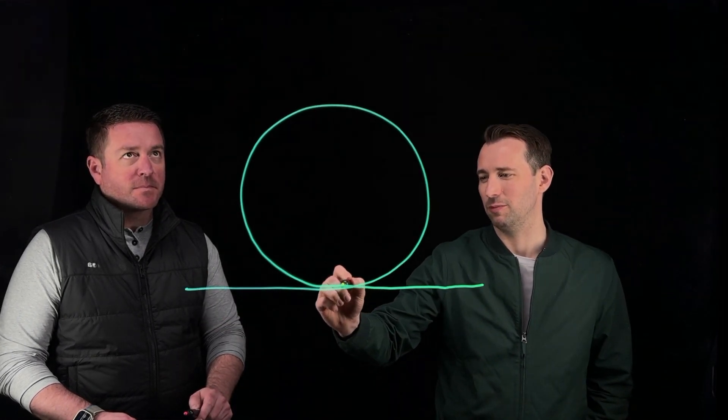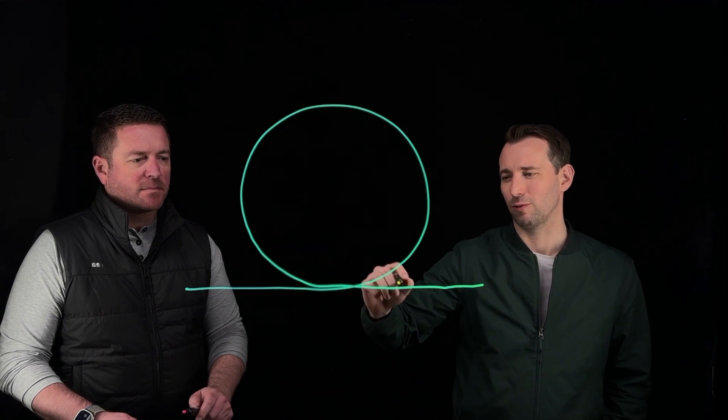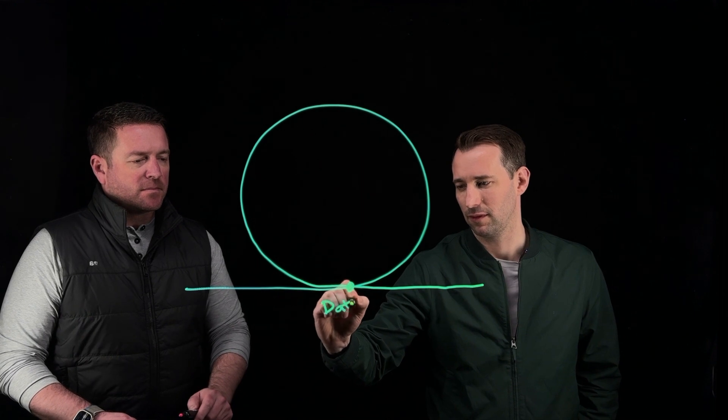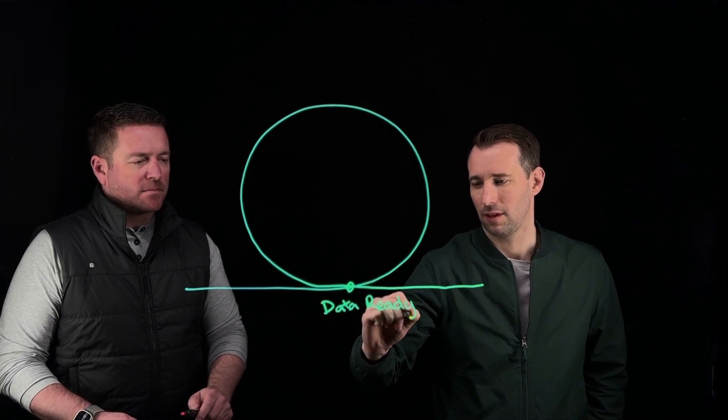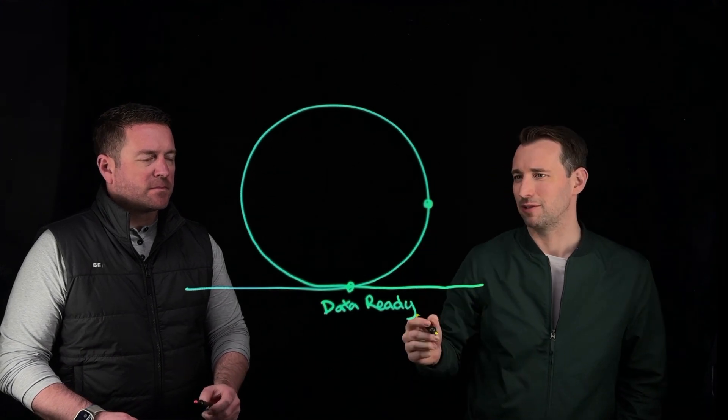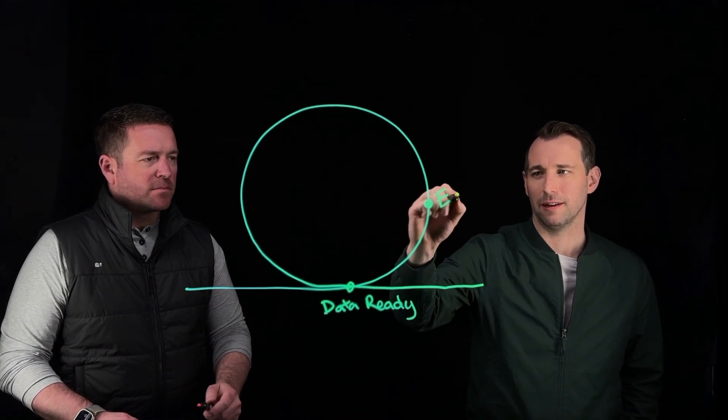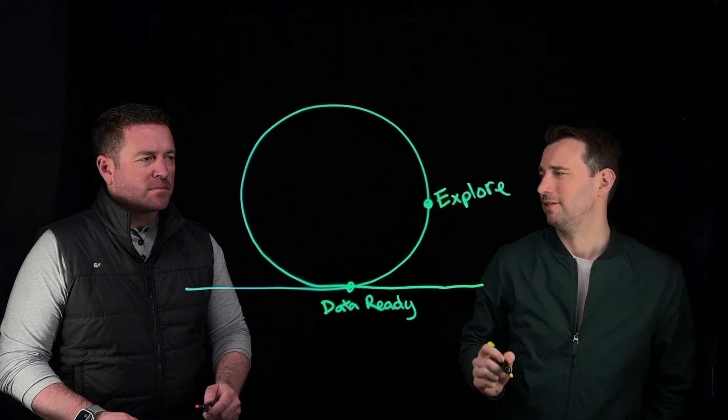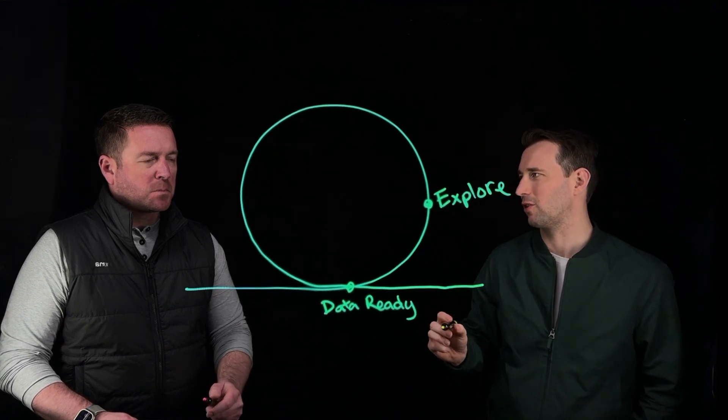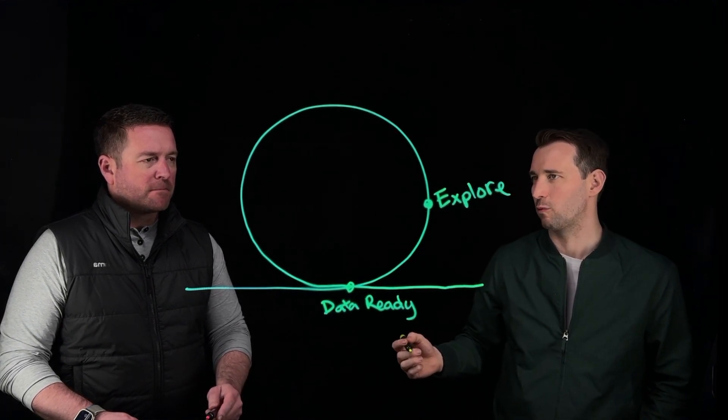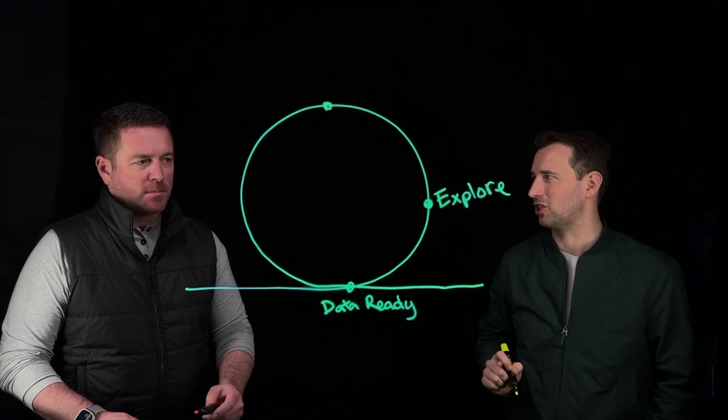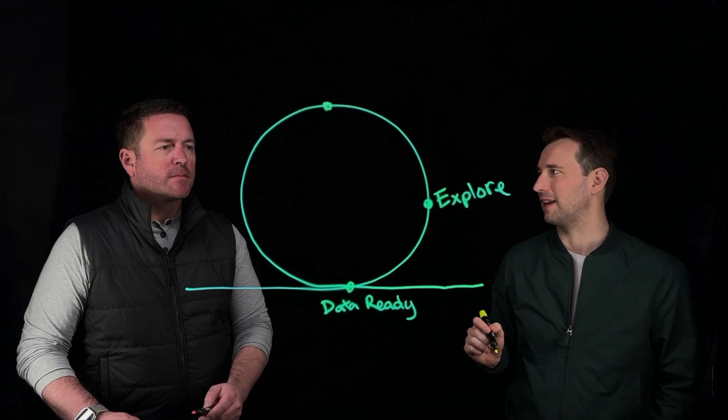In this process you're working through it and at some point you've ingested data and that data is ready. From there that data then goes to a business team and that business team starts to explore the data. After they've explored the data, in many cases this data has been pre-aggregated for the scale that it needs to work at and the business team identifies a challenge with the data and they need to make an update to it.